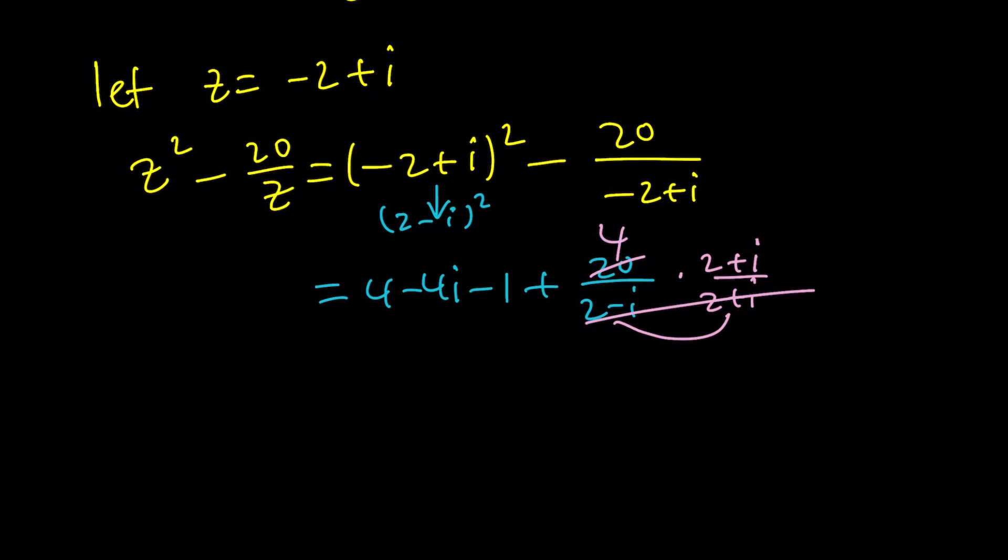And then from here, you're going to get the following. 3 minus 4i plus 8 plus 4i. Because you distributed 4 here, right? And then the 4i mathematically cancels out and you end up with 11.